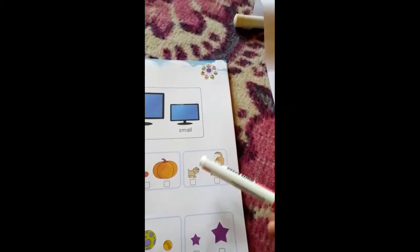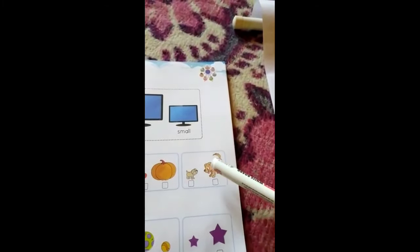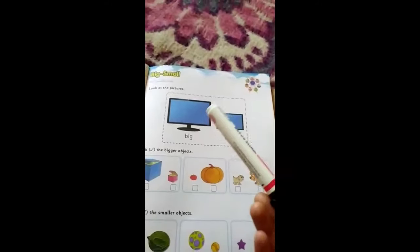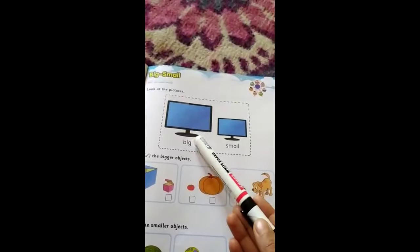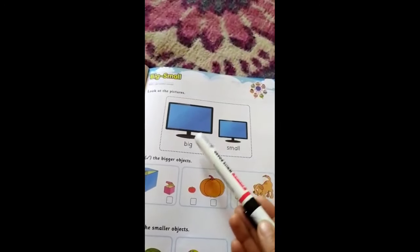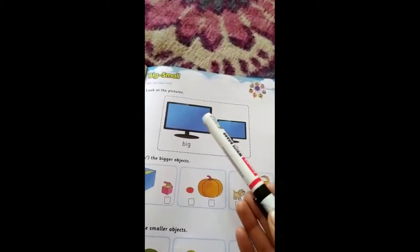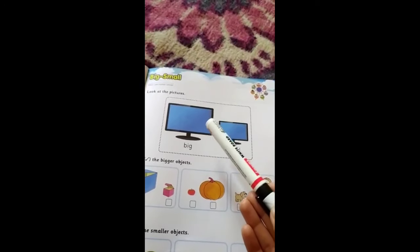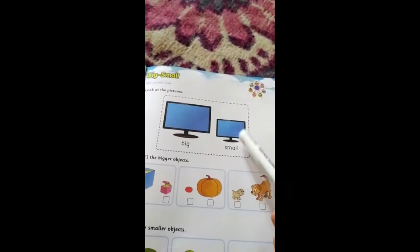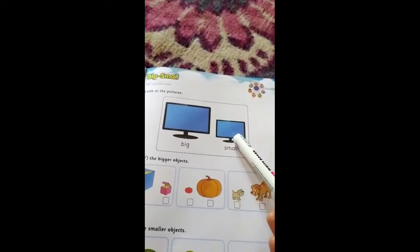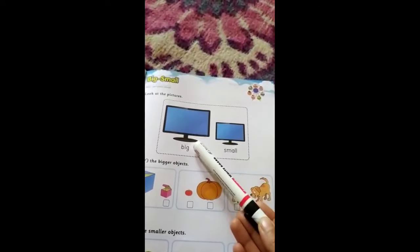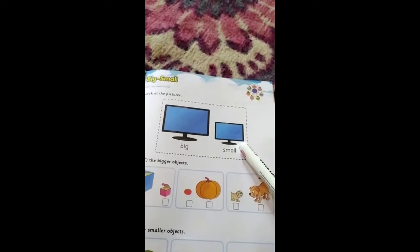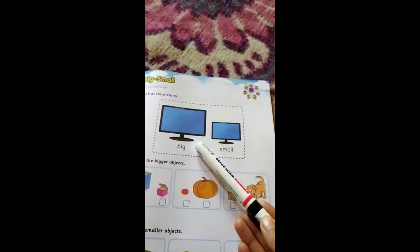When we compare two things on the basis of their size, we can say we get big and small. This monitor is big, this is small. Big means large, small means little.